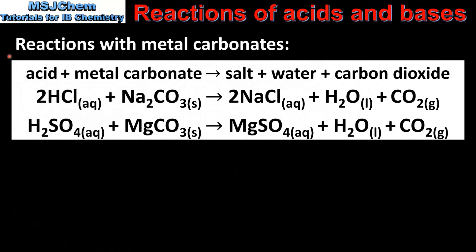Next we have reactions with metal carbonates. Here we can see the general word equation for the reaction between an acid and a metal carbonate. The products of the reaction are a salt, water and carbon dioxide. In our first example hydrochloric acid reacts with sodium carbonate to produce sodium chloride, water and carbon dioxide gas. In our second example sulfuric acid reacts with magnesium carbonate to form magnesium sulfate, water and carbon dioxide.